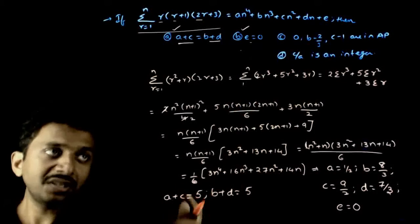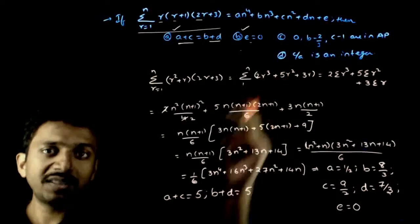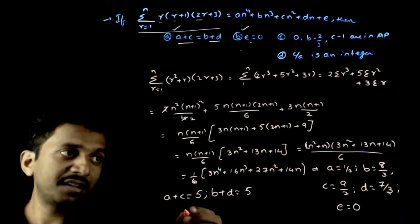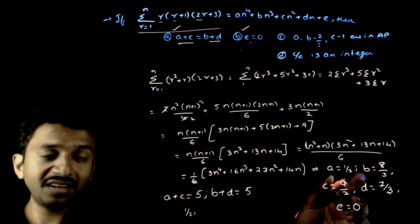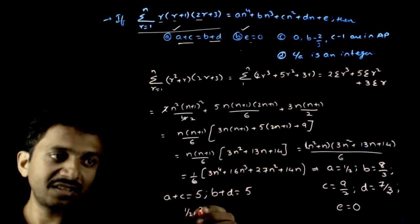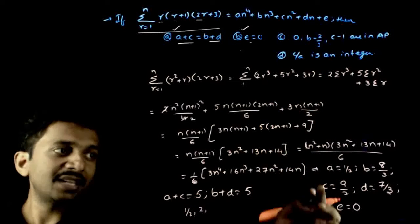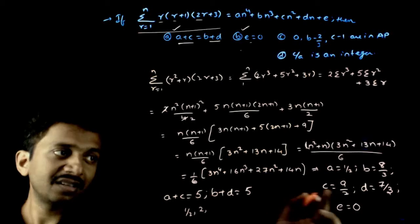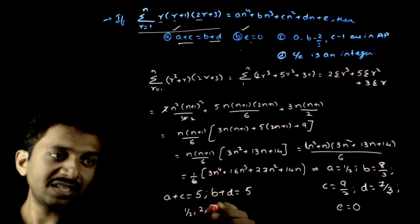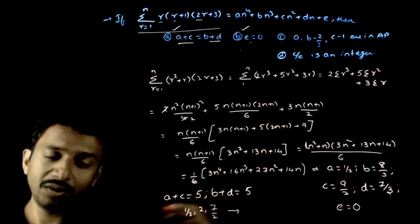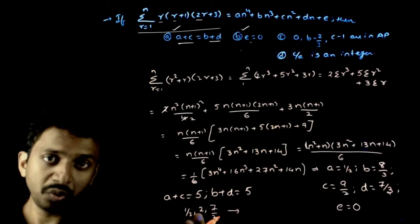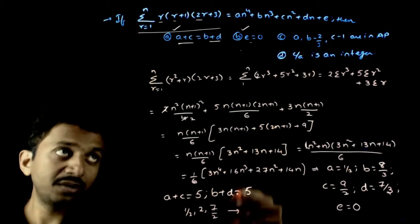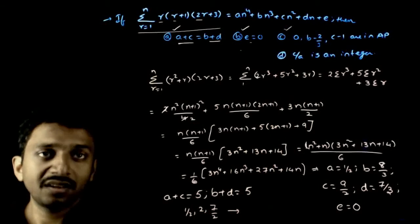Now let us go to the third option: a, b minus 2 by 3, and c minus 1. a is half, b minus 2 by 3 is 6 by 3, that's 2, and c minus 1 is 9 by 2 minus 1 is 7 by 2. Are these 3 in AP? Yes, 2 times 2, 4 equals 1 plus 7 by 2. So this is also right.